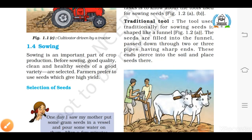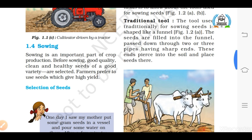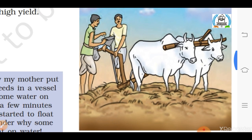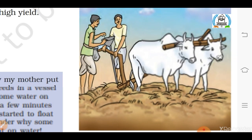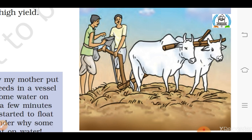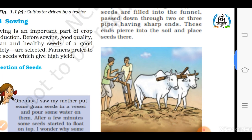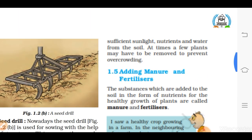The second most important step of agriculture practices after preparation of soil is sowing. It is very important to select a good quality of seed for better crop production. This can be done in different ways. The first is by traditional tool — as you can see in this figure, the traditional tool for sowing seeds is shaped like a funnel. Seeds are filled into the funnel and pass through two or three pipes with sharp ends that pierce into the soil and place the seeds there.